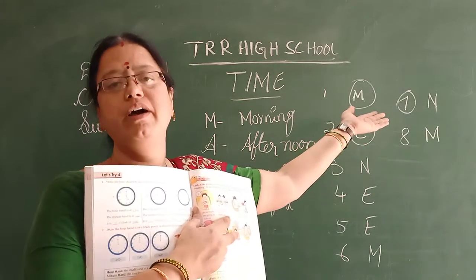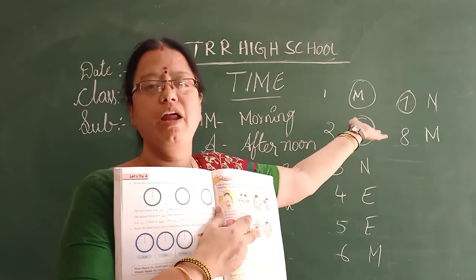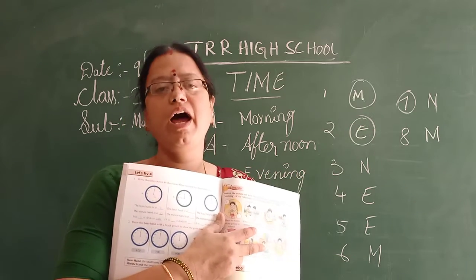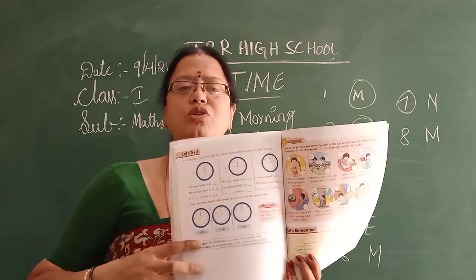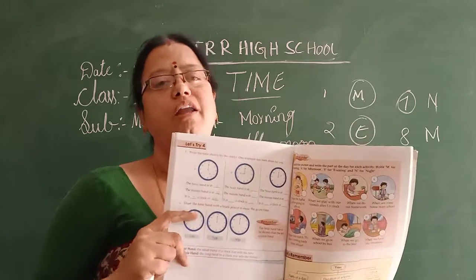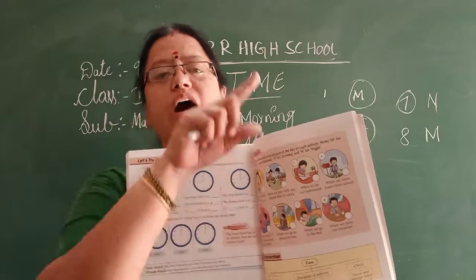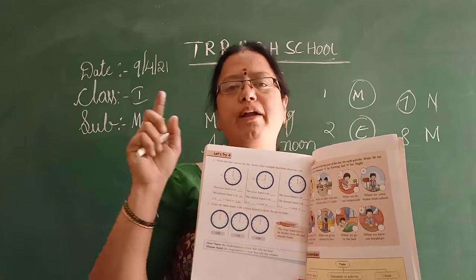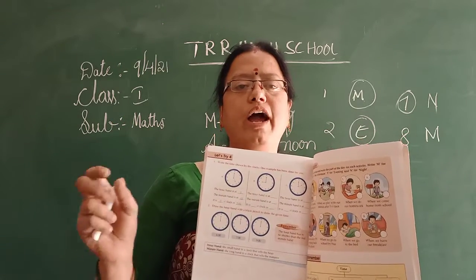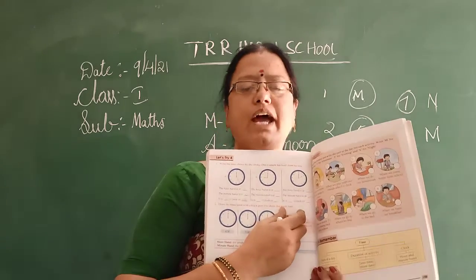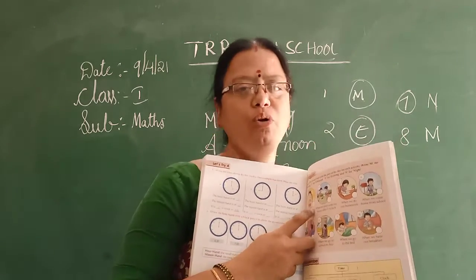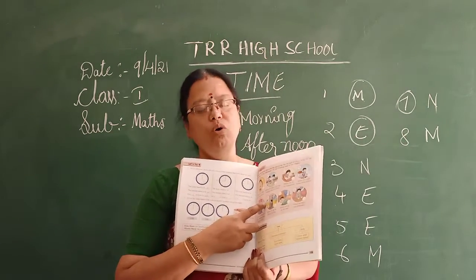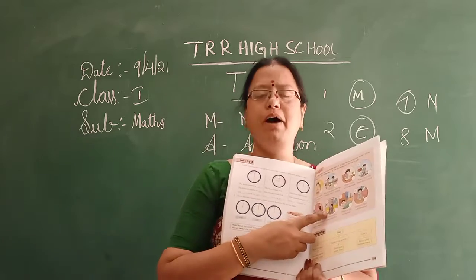So I hope you understood: M for morning, A for afternoon, N for night, E for evening. You also have to practice the time in your rough book — draw the clock and draw the short hand and long hand. Practice the time as well. Okay, bye!